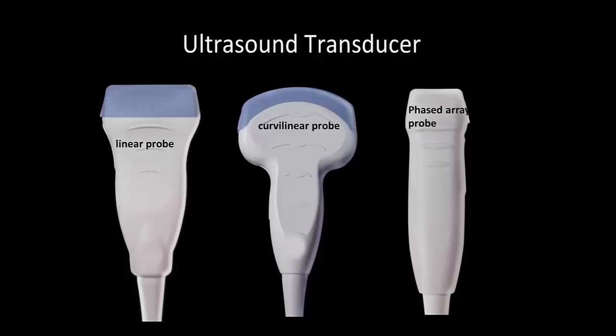Here are three different probes you should really be familiar with. Ultrasound probes come in many different shapes and sizes, depending on the purpose you want to use them for. A linear probe, as you can see on the far left, uses high frequency ultrasound to create high resolution images of structures near the body surface — for instance, if you want to scan your wrist, carpal tunnel, or peripheral veins. This probe is ideal for vascular imaging and certain procedures like central line placement.